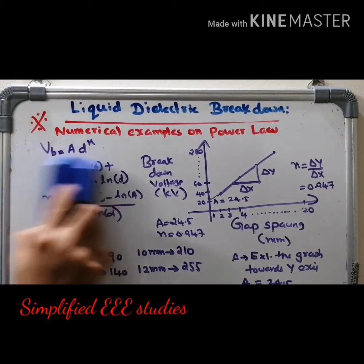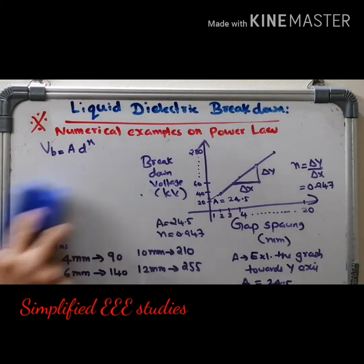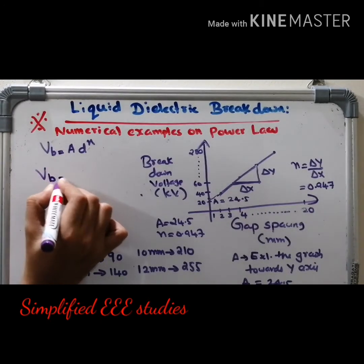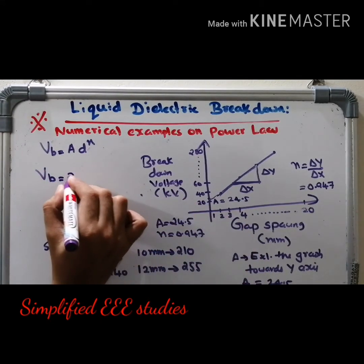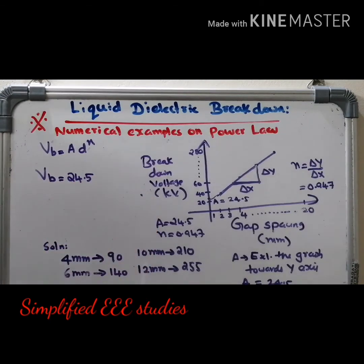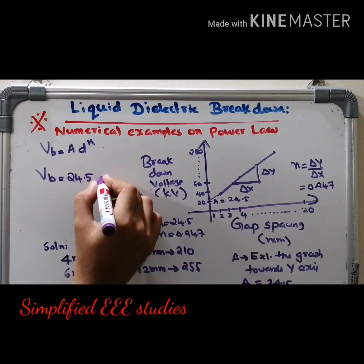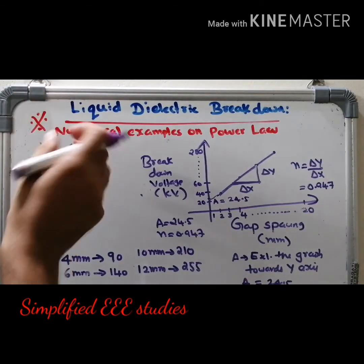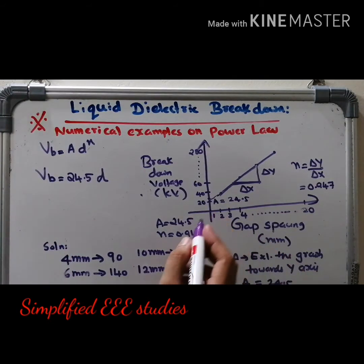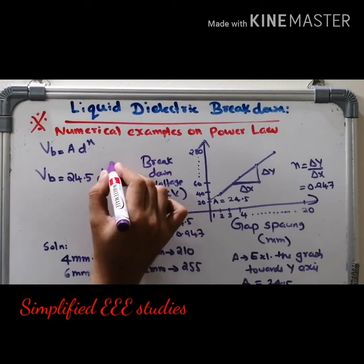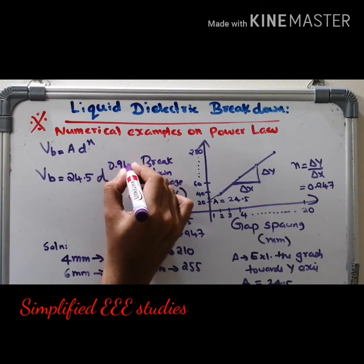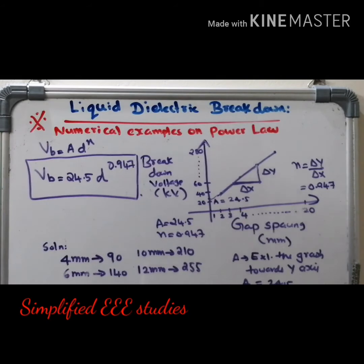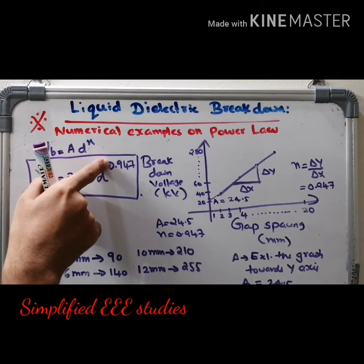Now the power law can be rewritten as: VB = 24.5 · D^0.947. The value of A is 24.5, obtained by extrapolating the graph towards the Y-axis. D is the variable (gap distance), and N = 0.947 is the slope. This is the relation for power law for the given data.